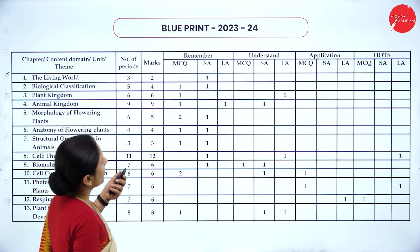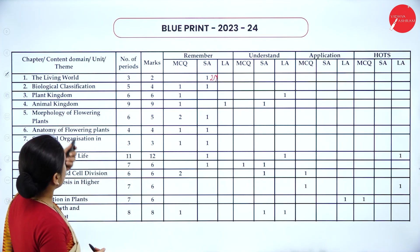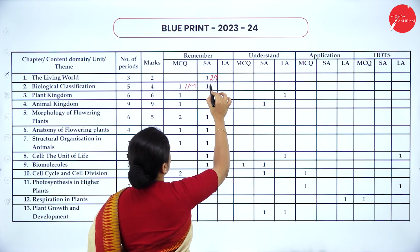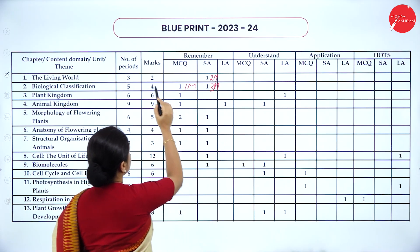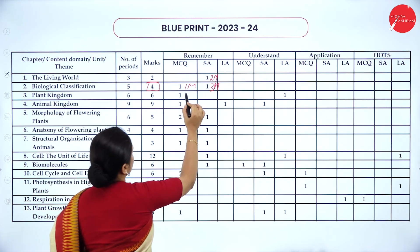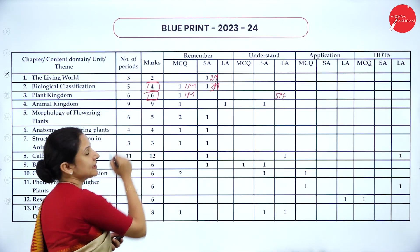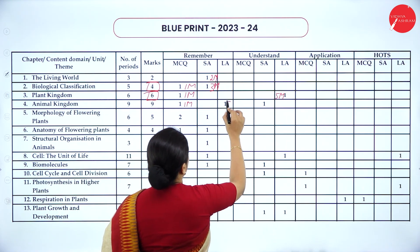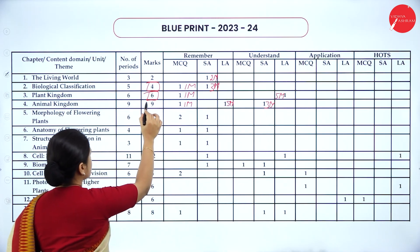From the Living World, MCQs are not asked — instead one 2-mark question will be asked. For Biological Classification, one MCQ for 1 mark and one 3-mark question will be asked, totalling 4 marks. Plant Kingdom carries one MCQ and one 5-mark question, totalling 6 marks. Animal Kingdom has 1 MCQ, one 5-mark, and one 3-mark question, totalling 9 marks.